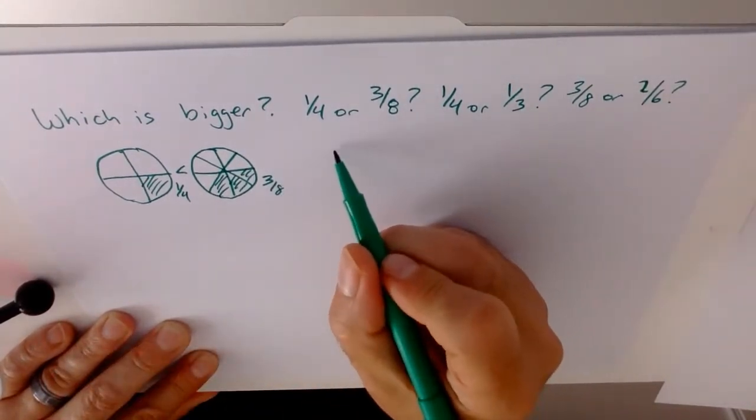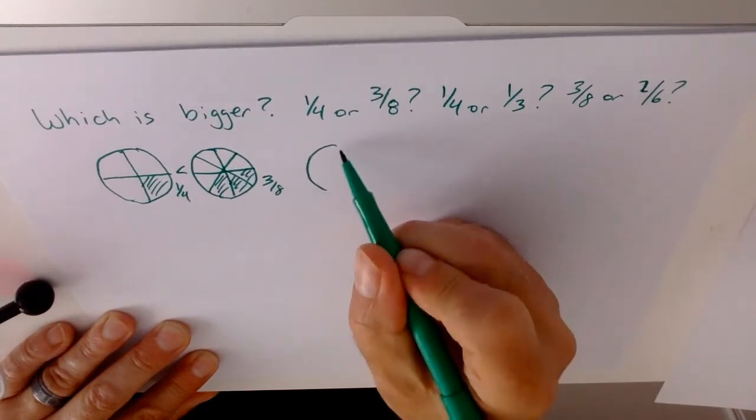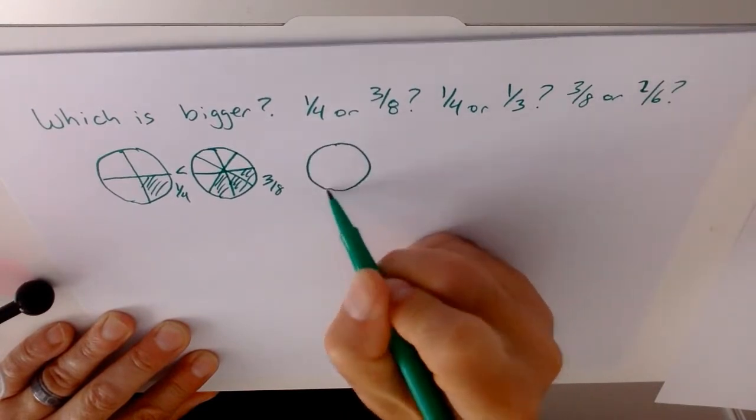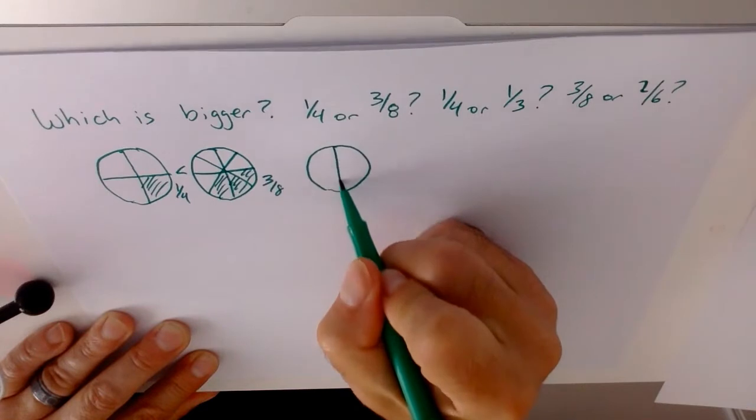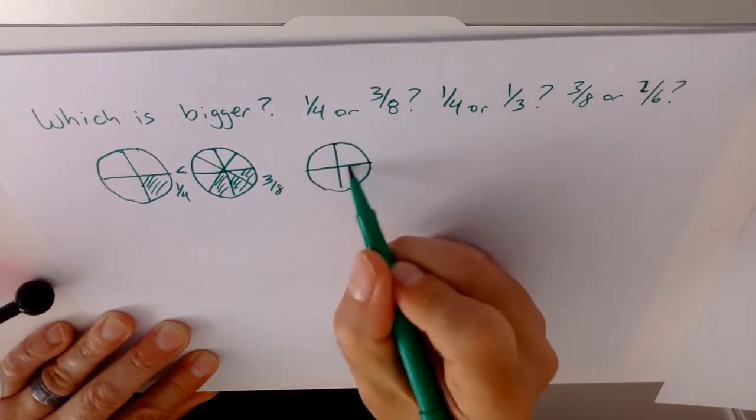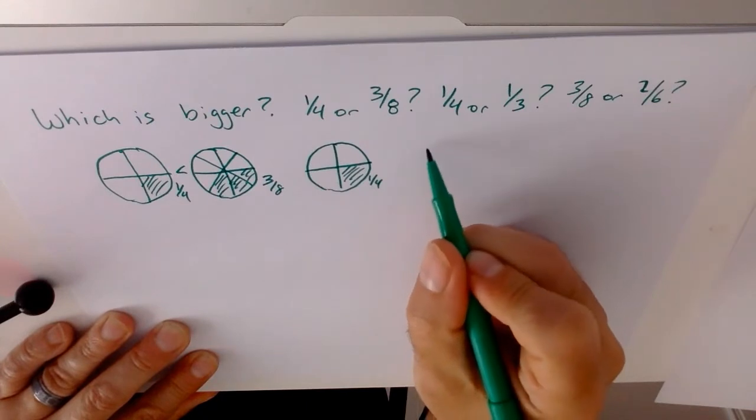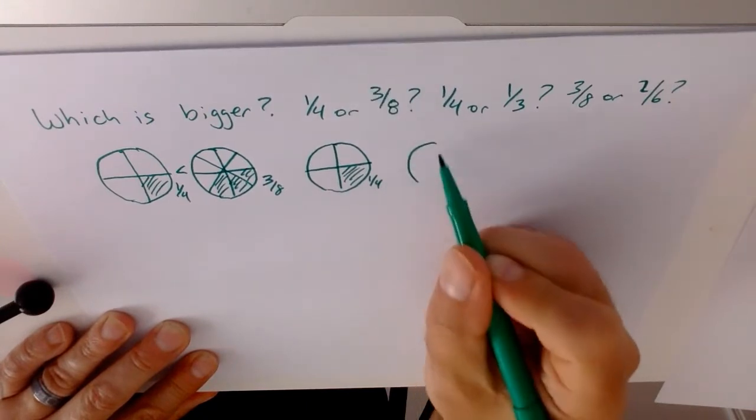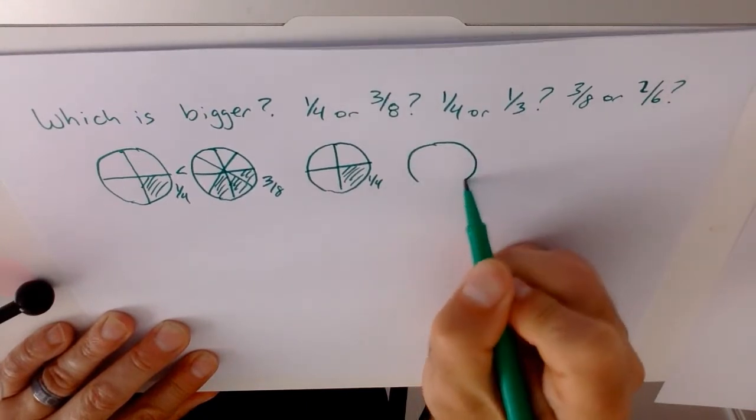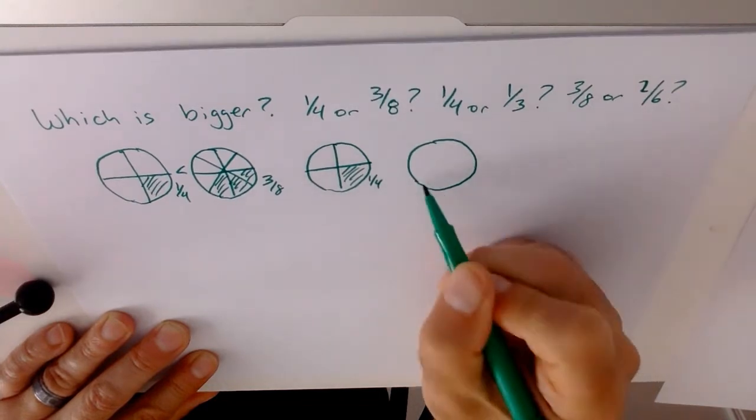Where we come into problems is this. We do our 1 quarter again, we split it up like that, no problem. But how do we compare it to 1 third? And it's like, how do I draw equal parts?